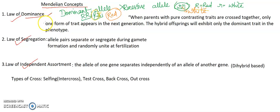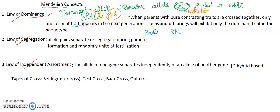To chaliye, ab dekhte hain ki law of dominance basically kehta kya hai. One form of trait appears in the next generation — jo humara first form hai trait ka. Trait humne aapko bataya tha, alternative form of trait. Suppose humne parental cross start karaya — capital R capital R, yeh humara parental cross hai. Suppose parents hain yeh, capital R capital R — suppose yeh male hai, aur yeh female hai, small r small r.